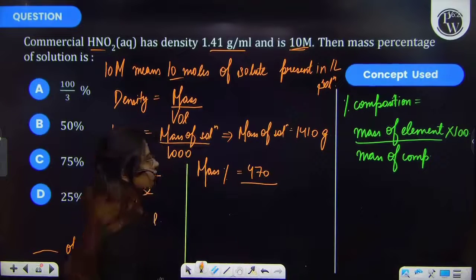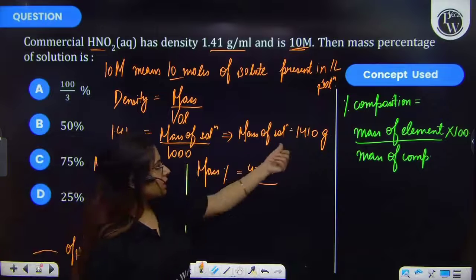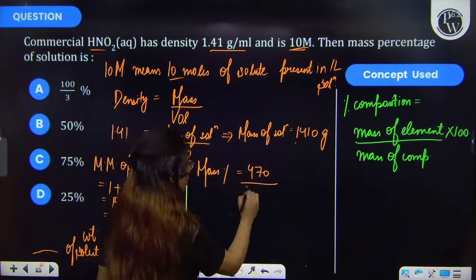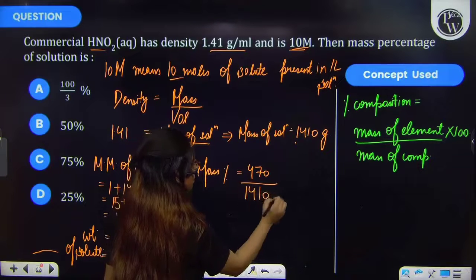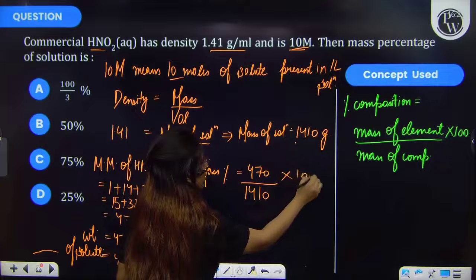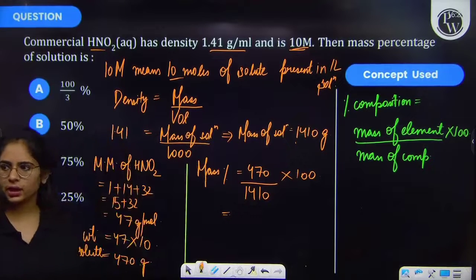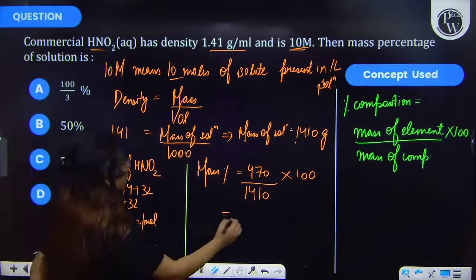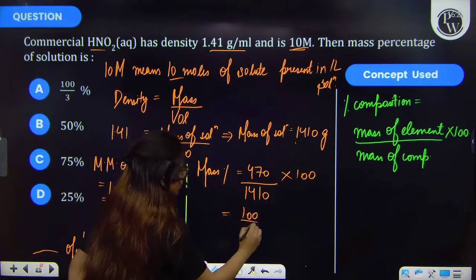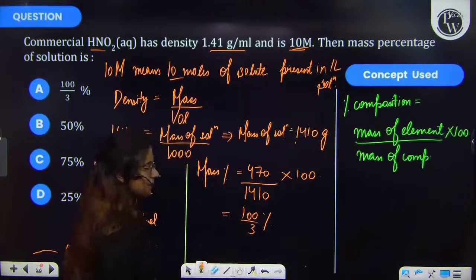Further, the total mass of the solution that means 1410 into 100, and so therefore on solving you will be getting 100 by 3 percent.